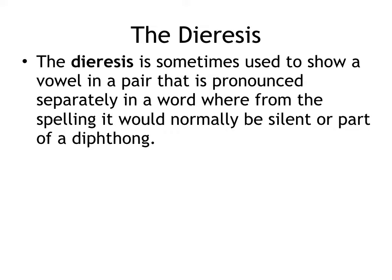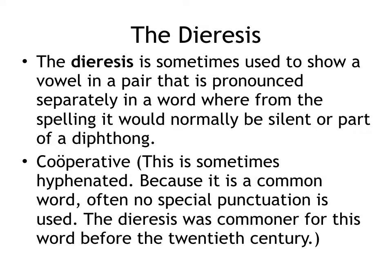Another one that used to be fairly common was the word coöperative. Because cooperative, cooperate, cooperation, and similar words have become very common in modern English, a lot of times no special punctuation is used. But the dieresis was more common for this word through the 20th century. One that word processors often put in automatically is the dieresis over the i in naïve. If we saw that in regular native English, we would pronounce it as a single syllable word, probably 'naive,' but with the dieresis it tells us it's naïve.